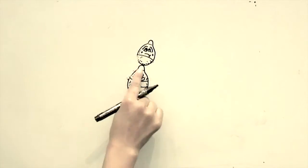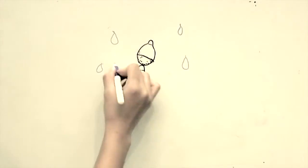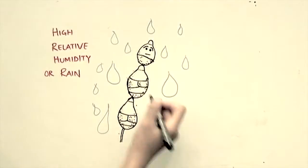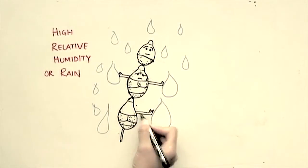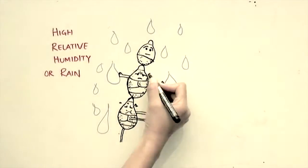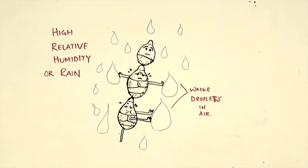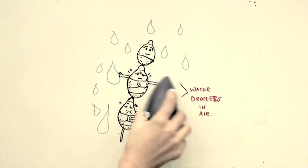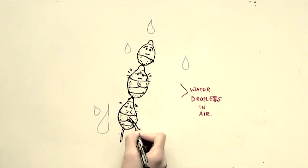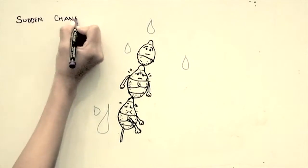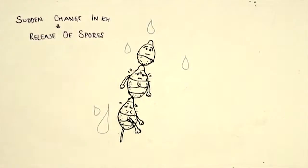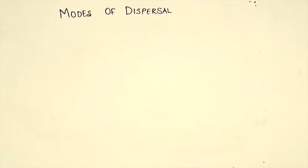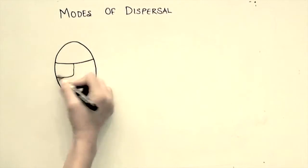With time, they started getting matured. When there is high humidity — with lots of water droplets in the atmosphere — with high humidity, continuous rain, or prolonged leaf wetness period, a high number of spores are produced. But as the relative humidity drops, there is a sudden change and this stress causes a release of spores to the environment.